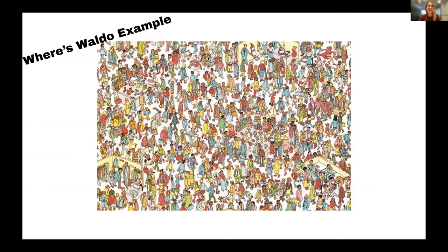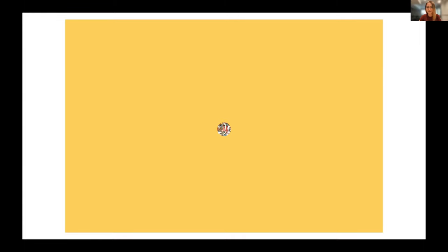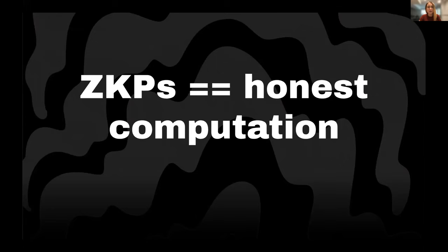For people who are totally new to zero knowledge proofs: the story goes that there was a math professor trying to explain what zero knowledge proofs are in a very simplistic way. He was reading Where's Waldo with his five-year-old son. They're looking at a Where's Waldo page, and the father says 'I know where Waldo is,' and the son says 'prove it.' So the father takes a huge newspaper, covers the entire book with it, leaving a small hole that reveals where Waldo is. The paper is much larger than the book, so it gives the son no information about where Waldo is — but it does give the son proof that the father knows where Waldo is.